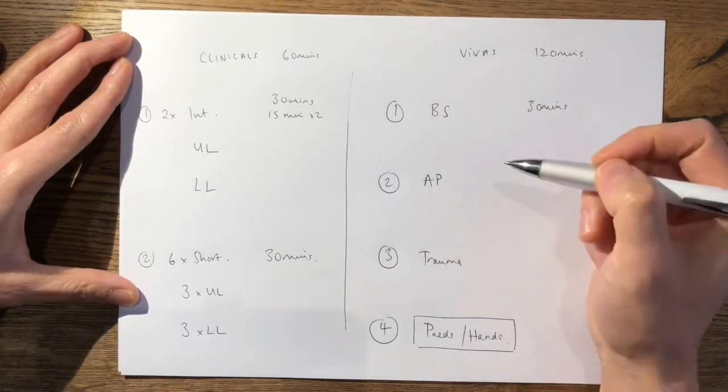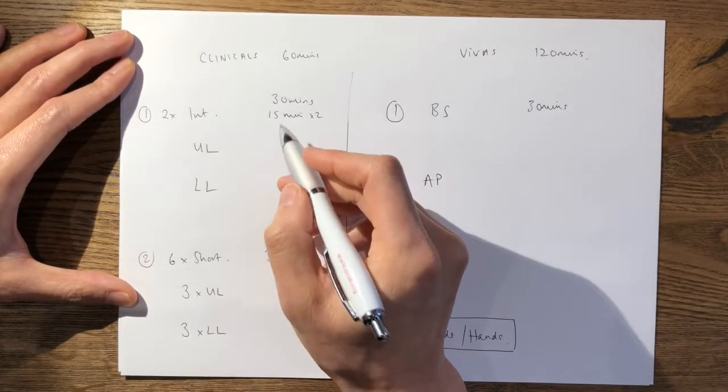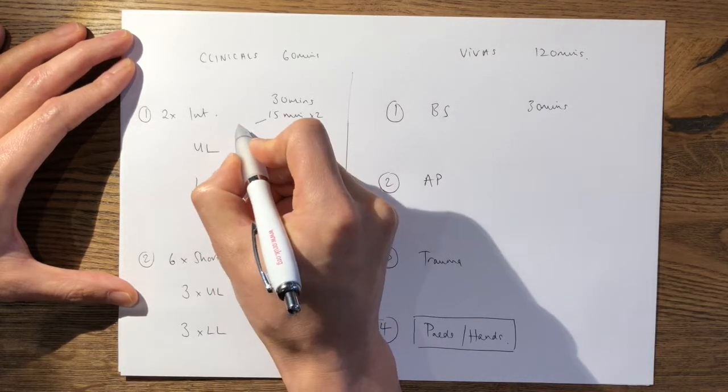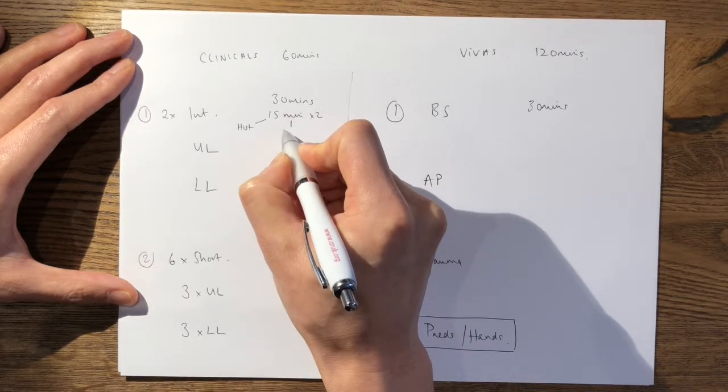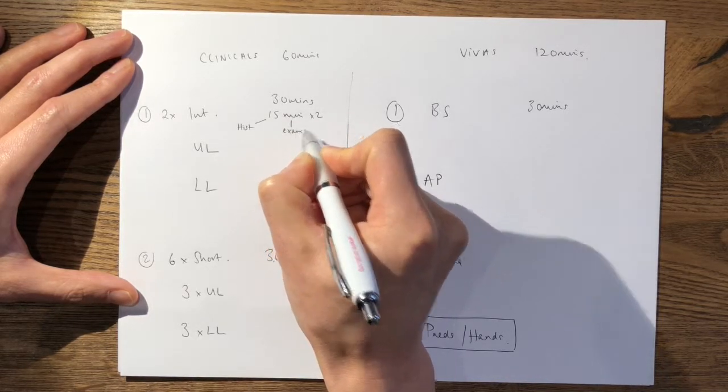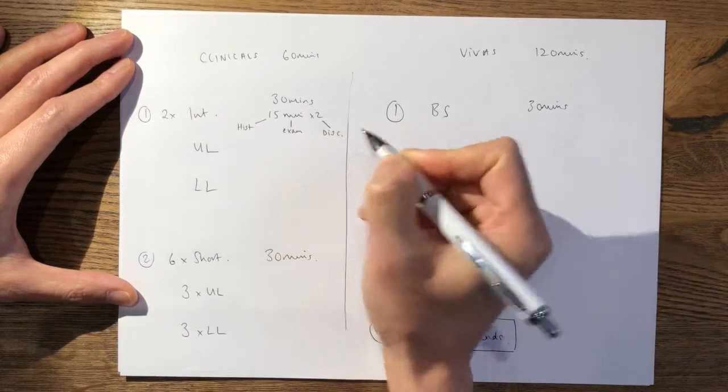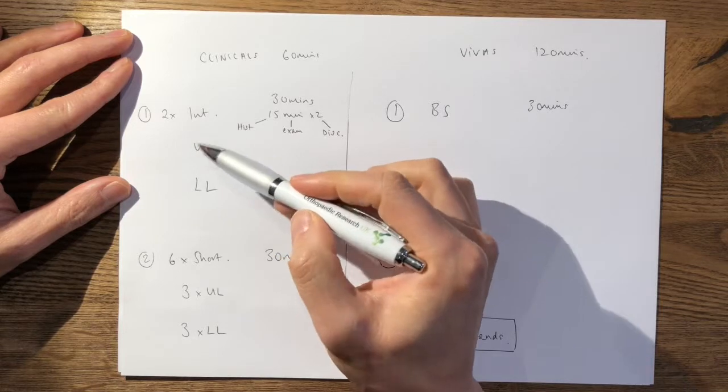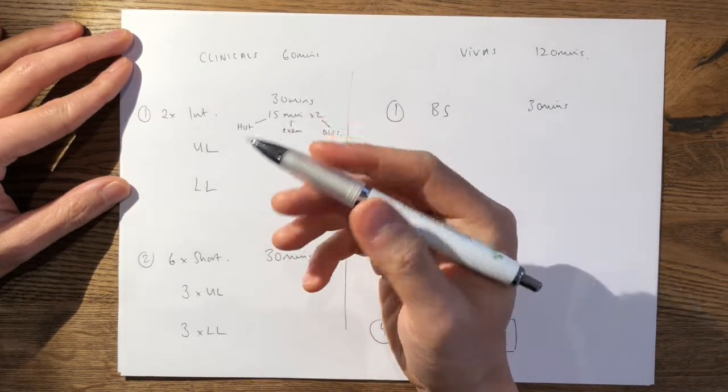So now to the scoring structure. In your clinicals, your intermediates in your 15 minutes are divided up into five minutes of history taking, five minutes for examination, and five minutes for discussion.